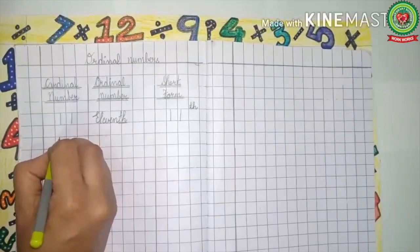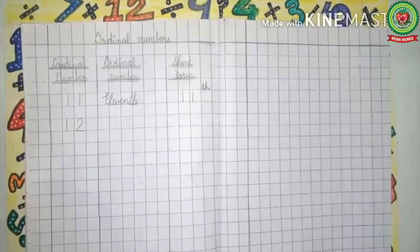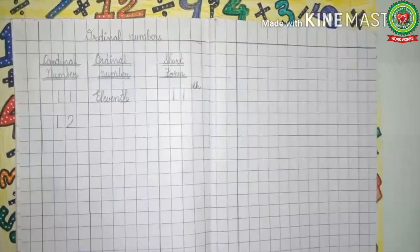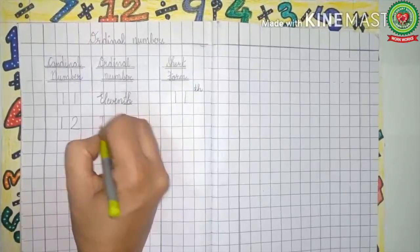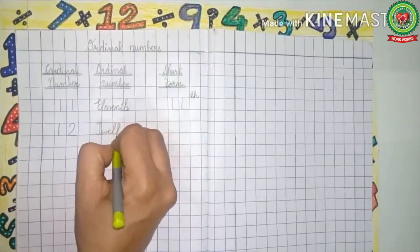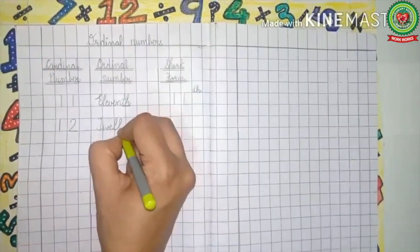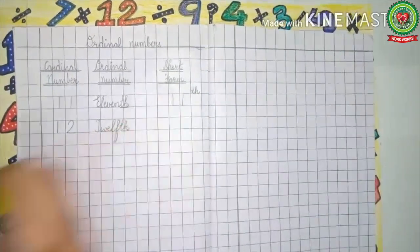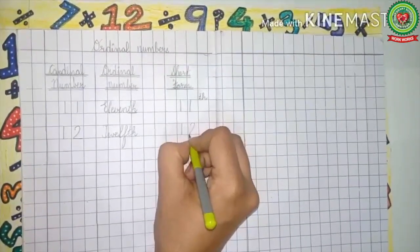After 11, what comes? 12. And the ordinal number of 12 is 12th. But here the spellings are changed — we write T-W-E-L-F in place of twelve, and then we add TH and it becomes 12th. Again, the short form is: write 12 and then add the last two letters TH.